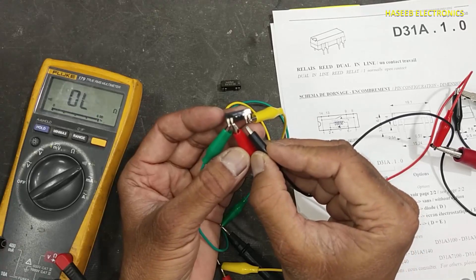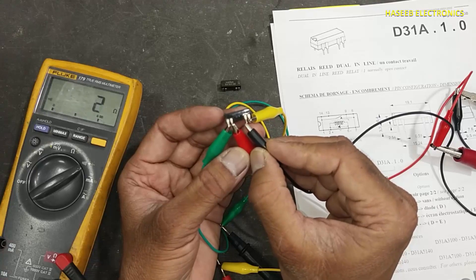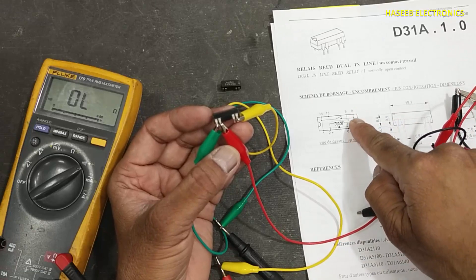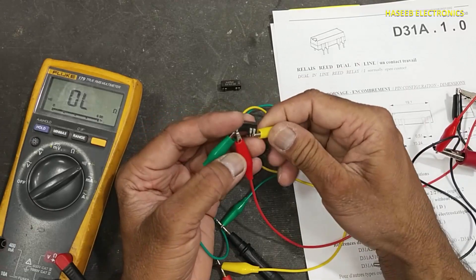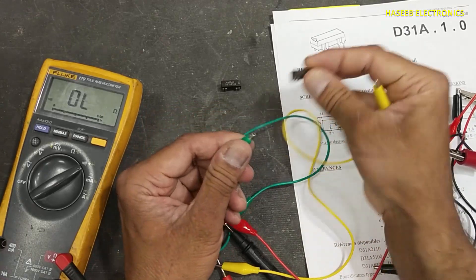This relay is good. When we apply voltage to the coil, it will make connection between pin numbers 7 and 1. Let's check the other relay. This one is good.